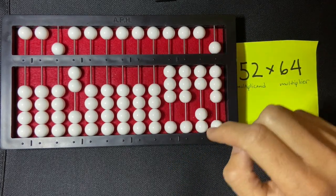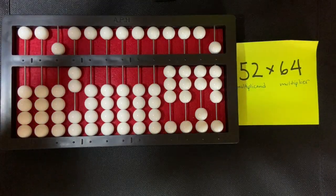And that's a two-digit by two-digit multiplication on the abacus using an indirect method.